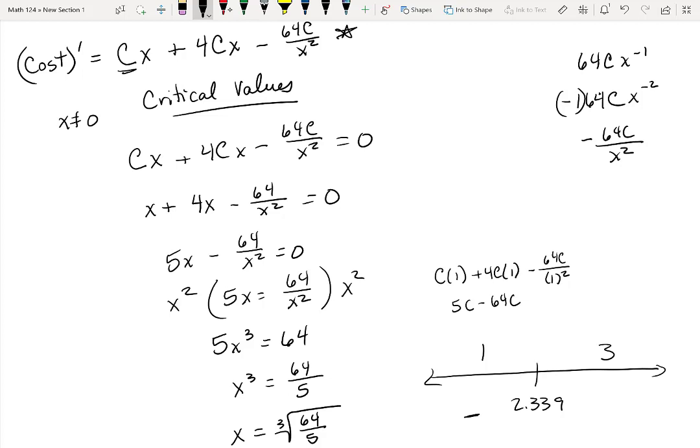And then I'm going to plug in a 3. So c times 3, 3. And this is going to be 9. So 3c plus 12c. So that's 15c minus 64 over 9c. But 63 over 9 would be like 7. So that for sure is positive. It's not bigger, this guy is less than 8.